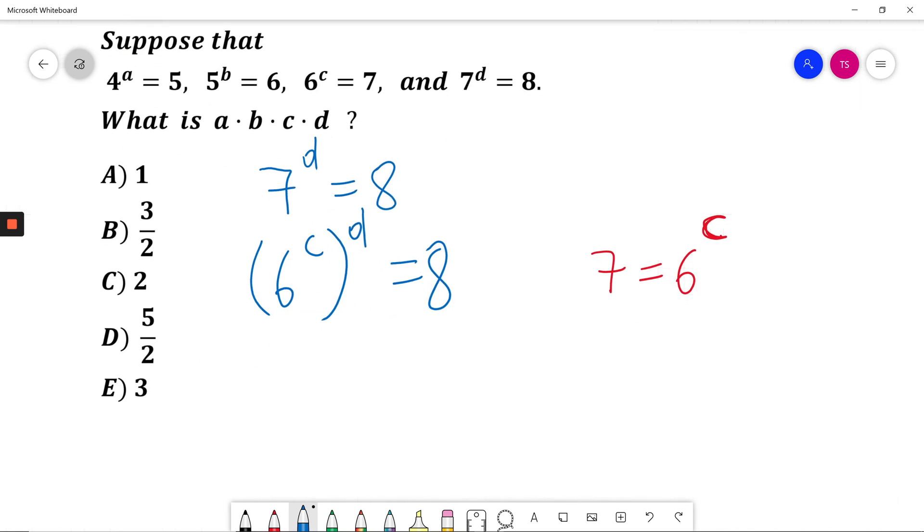Now I think about 6. I know 6 is equal to 5 to power of B. I will substitute this. In place of 6 I'm writing 5 to power of B to power of C to power of D. This is equal to 8.